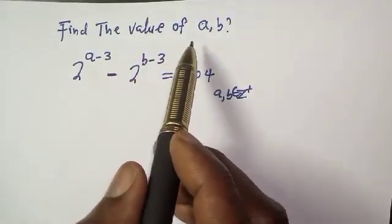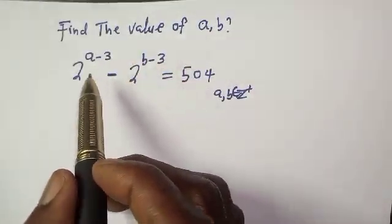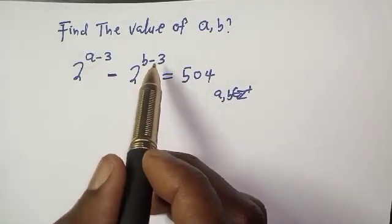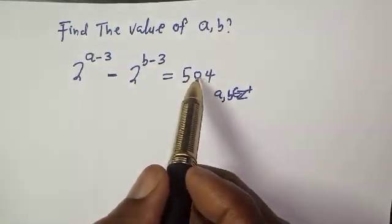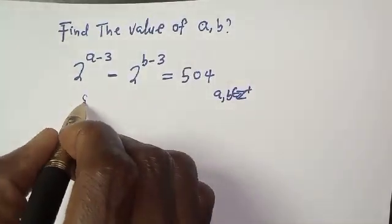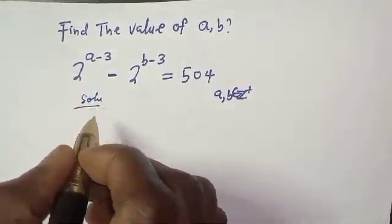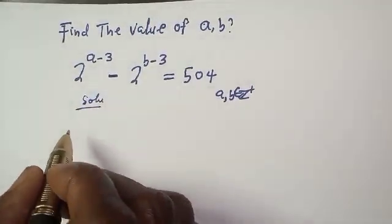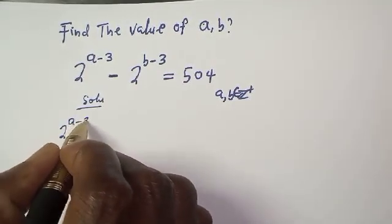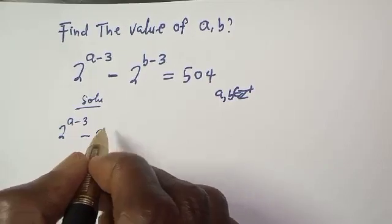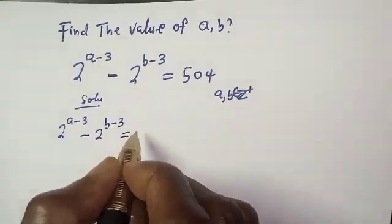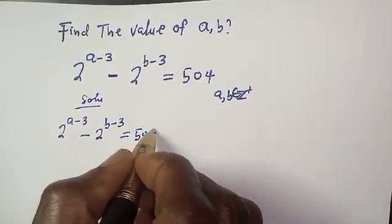Find the value of a and b. The given equation is 2 raised to power a minus 3, minus 2 raised to power b minus 3, is equal to 504, where a and b are positive integer solutions.